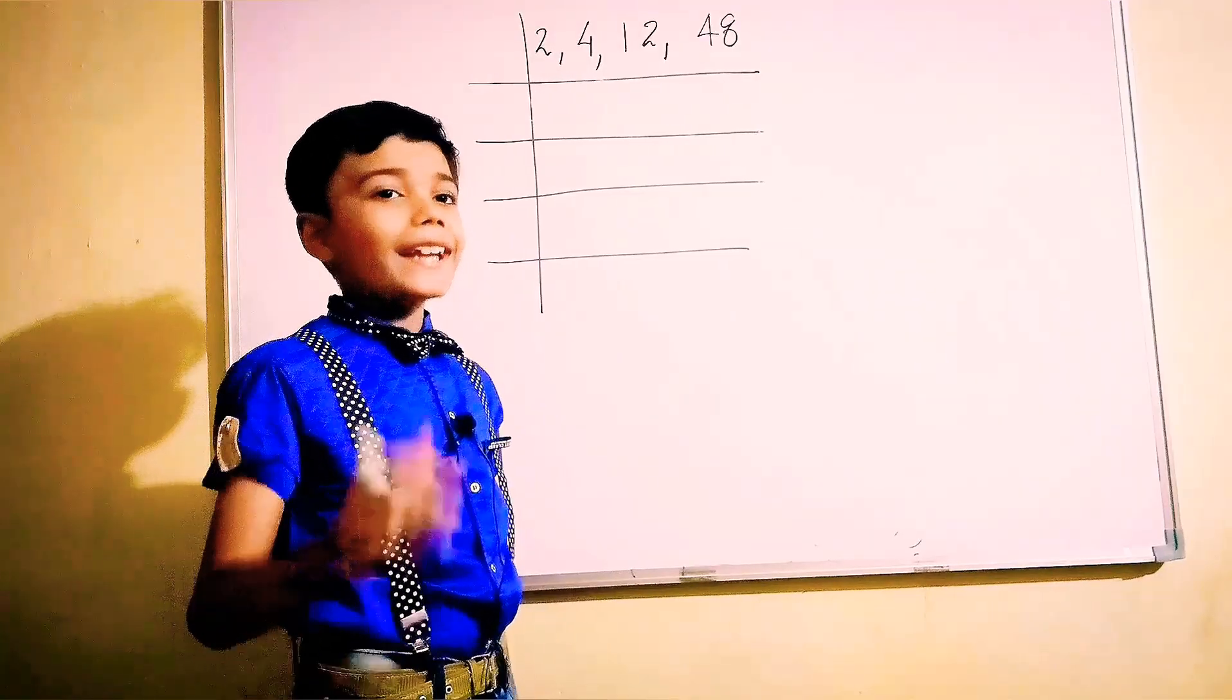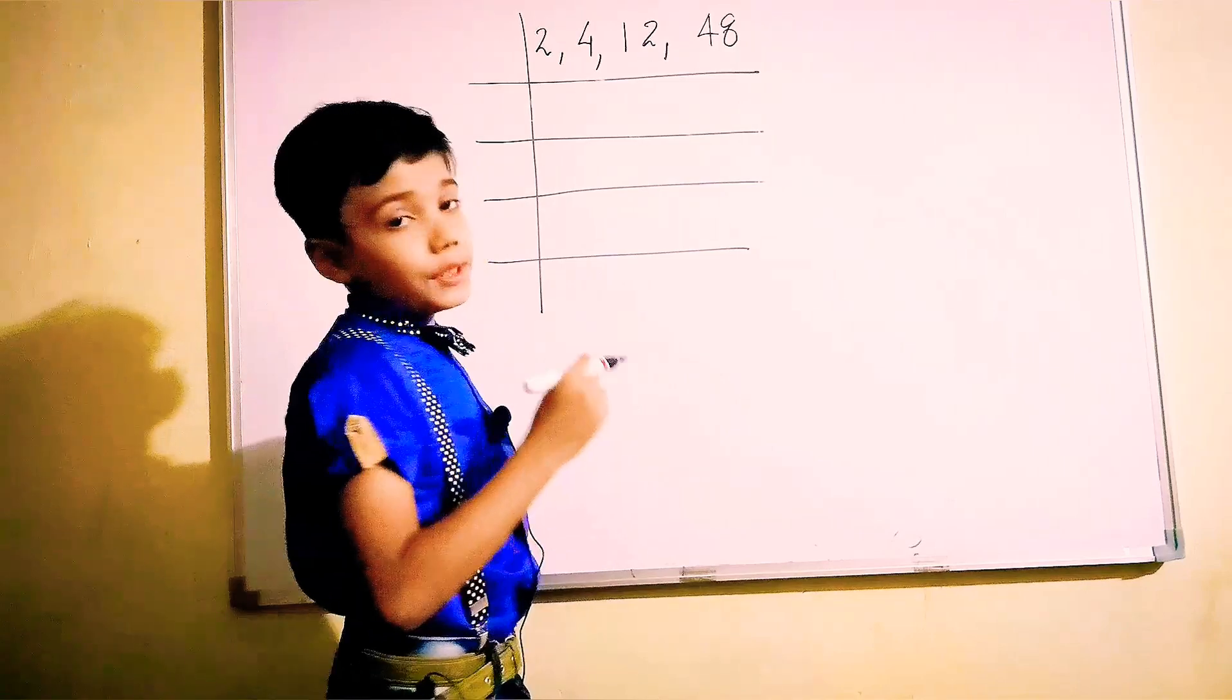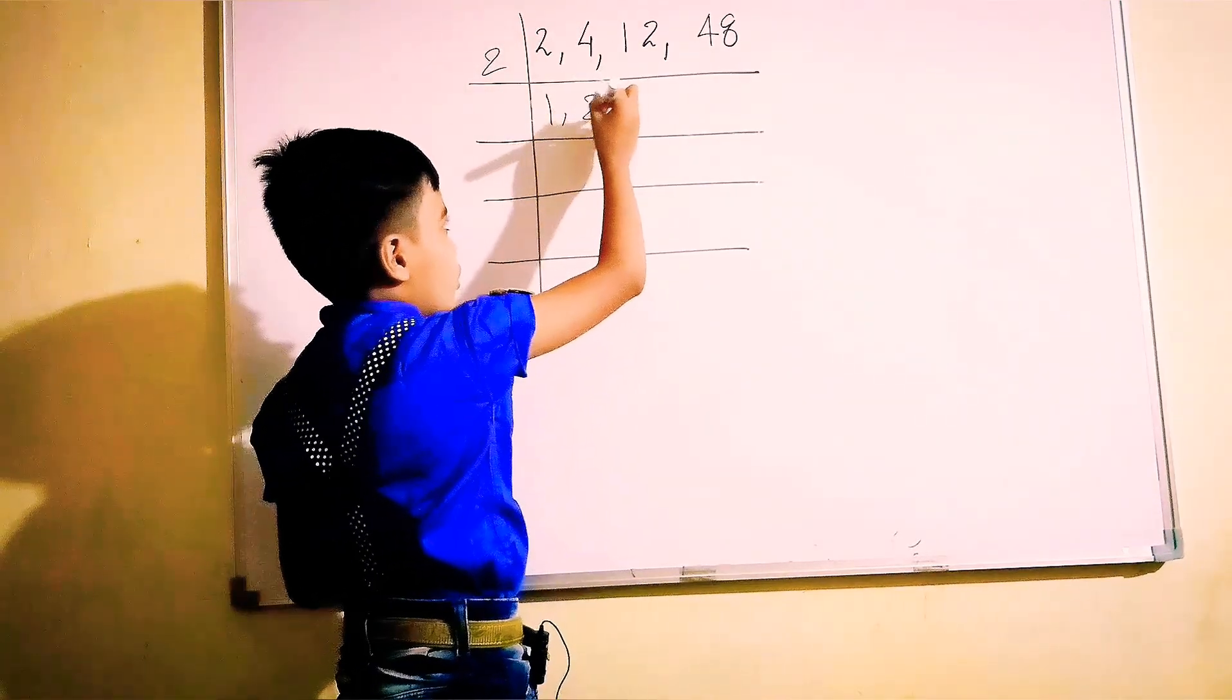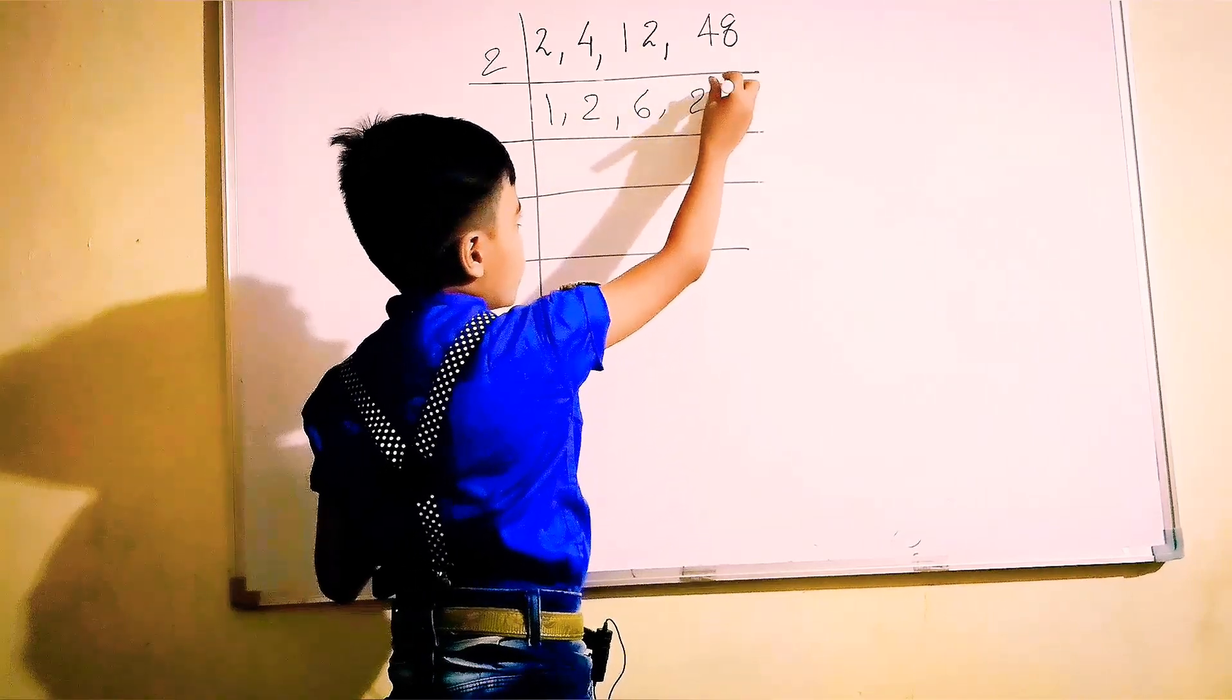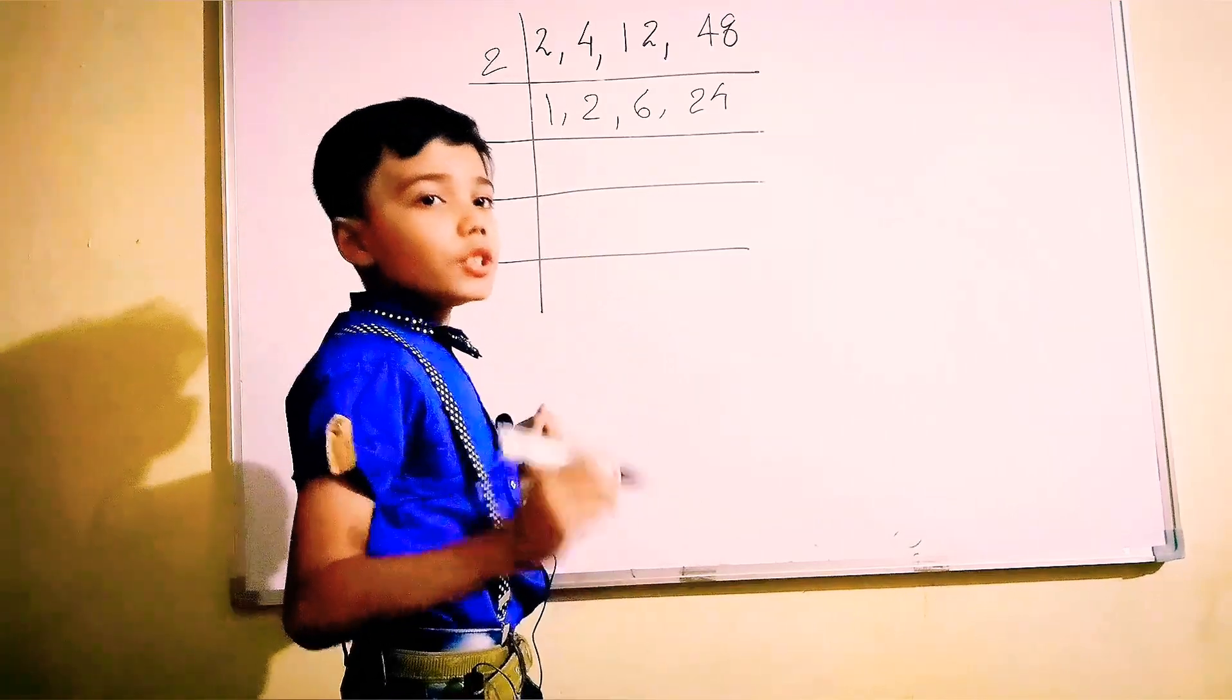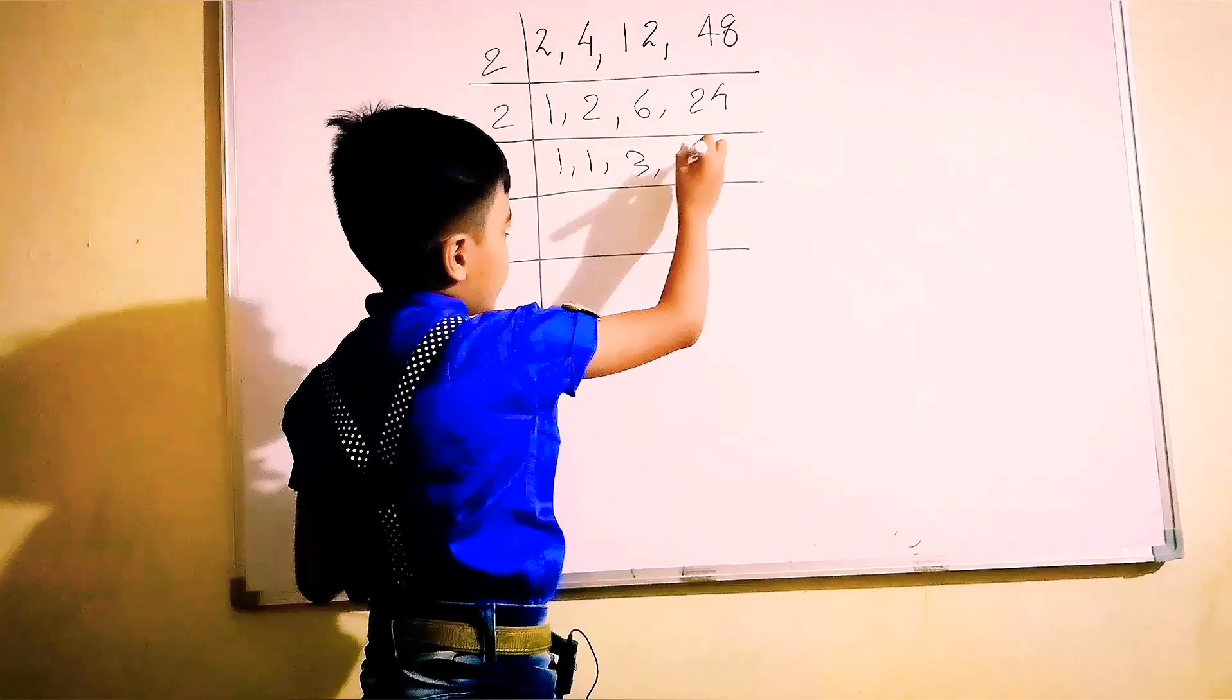Let's take an example. Suppose we are having 2, 4, 12 and 48. These all numbers are divisible by 2, so we will divide from 2. 2 ones are 2. These numbers are also divisible by 2, we will again divide from 2. 1 will be as it is. 2 ones are 2, 2 ones are 2, 2 threes are 6, and 2 twelves are 24.